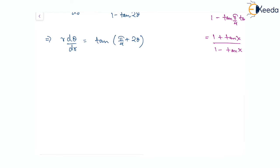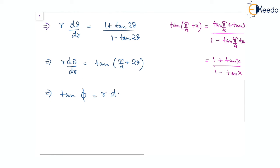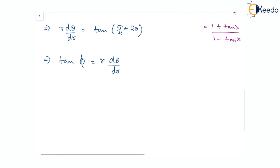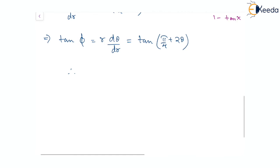This is the expected form: tan(φ), which is the angle between the radius vector and the tangent, equals r(dθ/dr) = tan(π/4 + 2θ). Therefore, on comparison, φ = π/4 + 2θ.